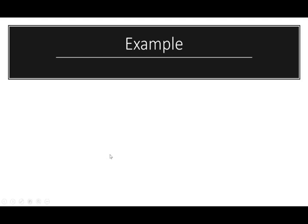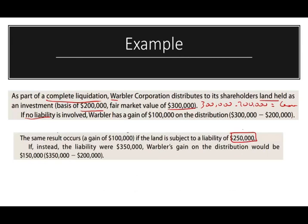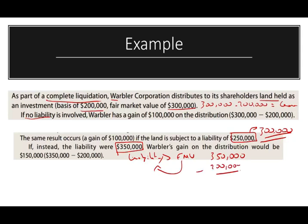As part of a complete liquidation, W distributed to a shareholder land held as an investment with a basis of $200,000 and a fair market value of $300,000. That gives us a gain of $100,000 — when there's a gain, it's not an issue; we always recognize the gain. If there's a liability of $250,000, we still use $300,000 FMV. But if the liability is $350,000 — greater than the FMV — we use $350,000 as FMV, giving us a gain of $150,000 ($350,000 minus $200,000 basis).